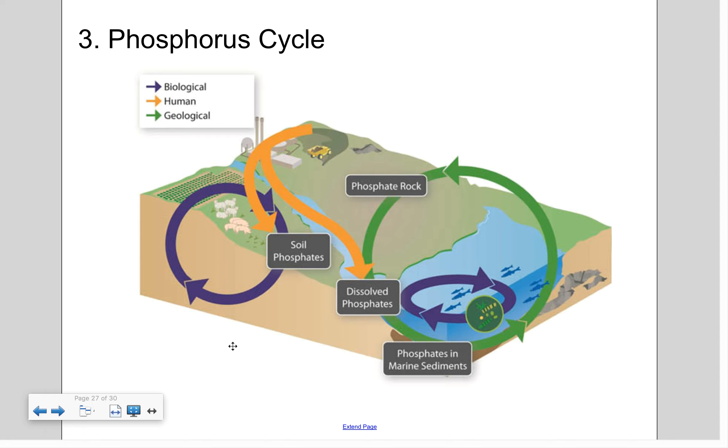So one reservoir of inorganic phosphorus is found in the geosphere in the form of phosphate rock right here, as well as soil minerals. Another reservoir is located in hydrospheres down here, basically dissolved phosphate and phosphate sediments in freshwater and marine environments. So this is the phosphorus cycle.